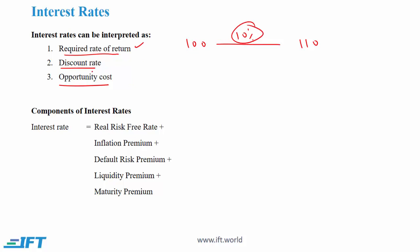We can also say that interest rates represent a discount rate. So if we take $110 after year 1 and discount this back at 10%, then we get $100. So therefore 10% is also a discount rate. Interest rates can also be thought of as an opportunity cost, because if you spend these $100 today then you give up a 10% return.